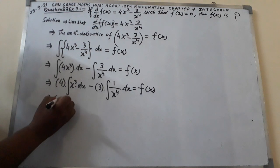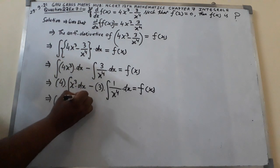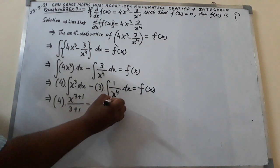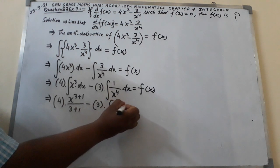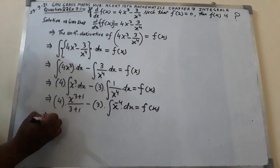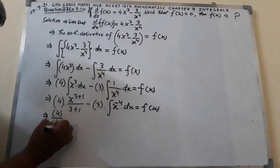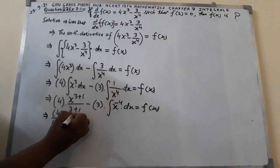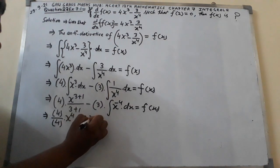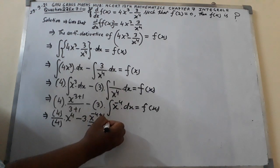This implies: 4 times the integral of x cubed dx gives x raised to the power 3 plus 1 over 3 plus 1, minus 3 times the integral of x raised to the power minus 4 dx gives x raised to the power minus 4 plus 1 over minus 4 plus 1, equals f of x.